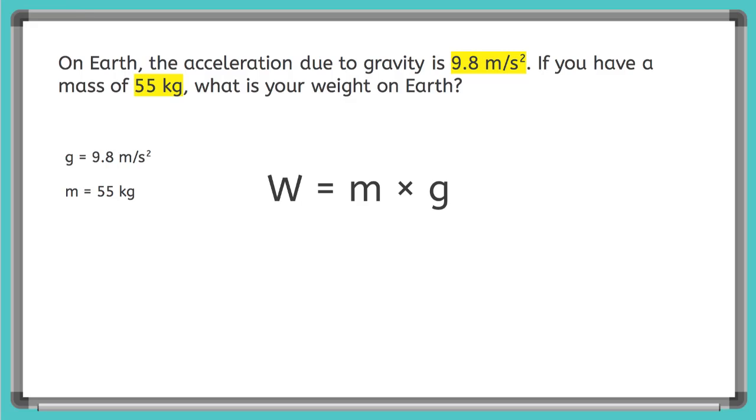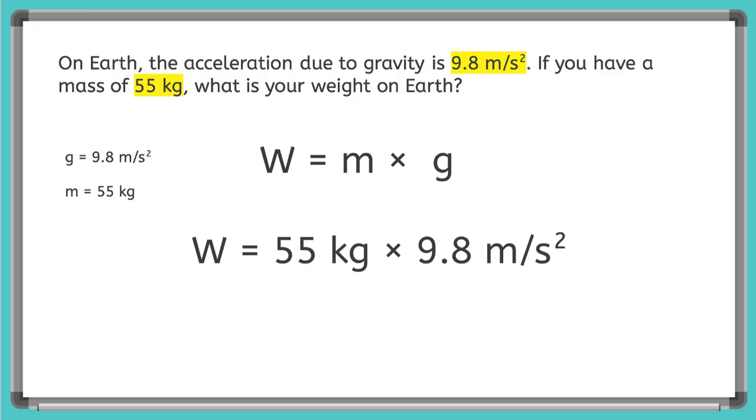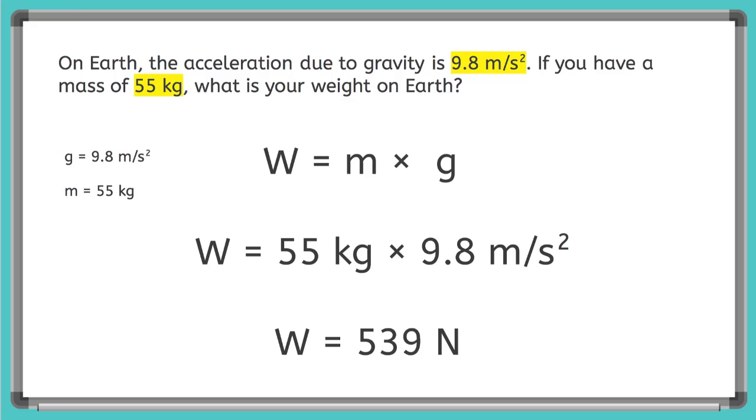So big W is our weight, M is our mass, and little g is the acceleration due to gravity on Earth. So we can plug in our numbers. So the weight equals 55 kilograms times 9.8 meters per second squared. And we get a weight of 539 newtons.